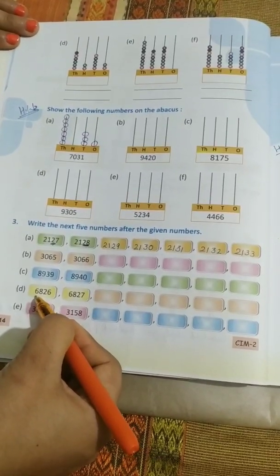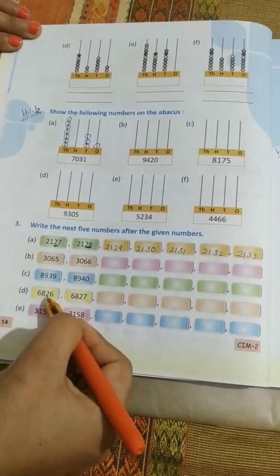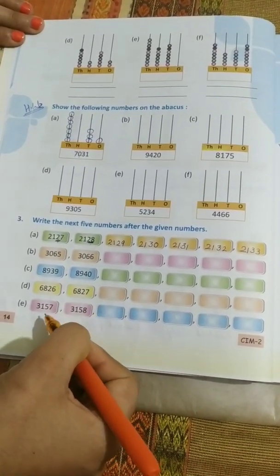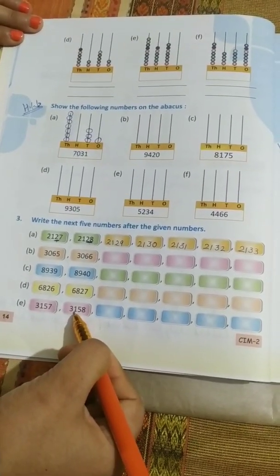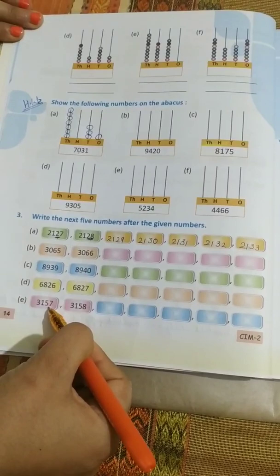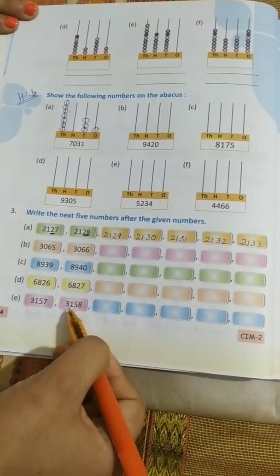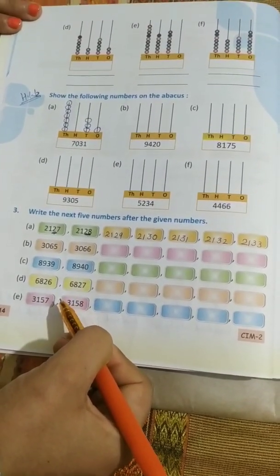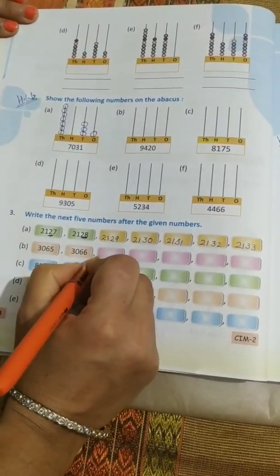Here 6,8, 6,8 same. 26, 27, only the last 2 digits are changing. Now here 31, 31, 31, 31 same. Here 57 is changing to 58. So I think you people can do it yourself. B part I will write on the book. The rest of the parts you will do it yourself. Remember students, you have to write very neatly on the book.